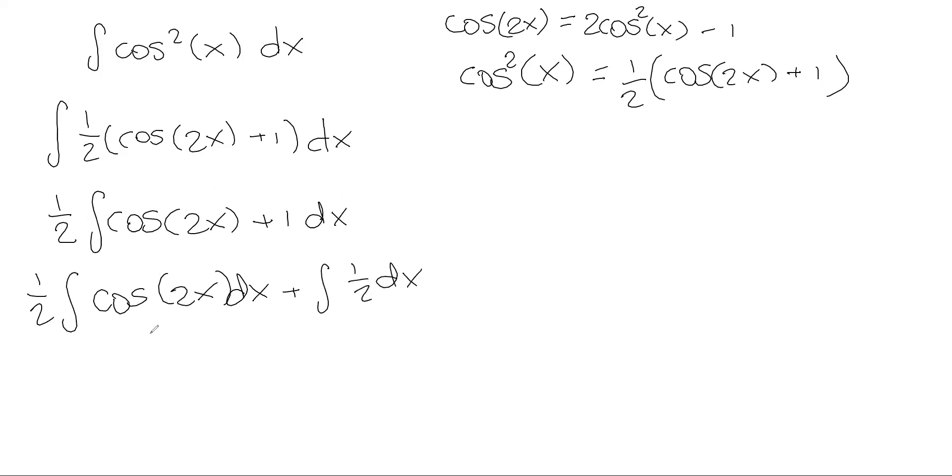We could break it up into separate integrals. We have 1/2 integral of cosine of 2x dx plus the integral of 1/2 dx. For this first one we know we're going to have to use a u substitution. We're going to set u equal to 2x, and the derivative of u with respect to x would be 2. Rewriting this yields du equals 2 dx. So we want to divide both sides by 2, and we get dx is equal to 1/2 du.